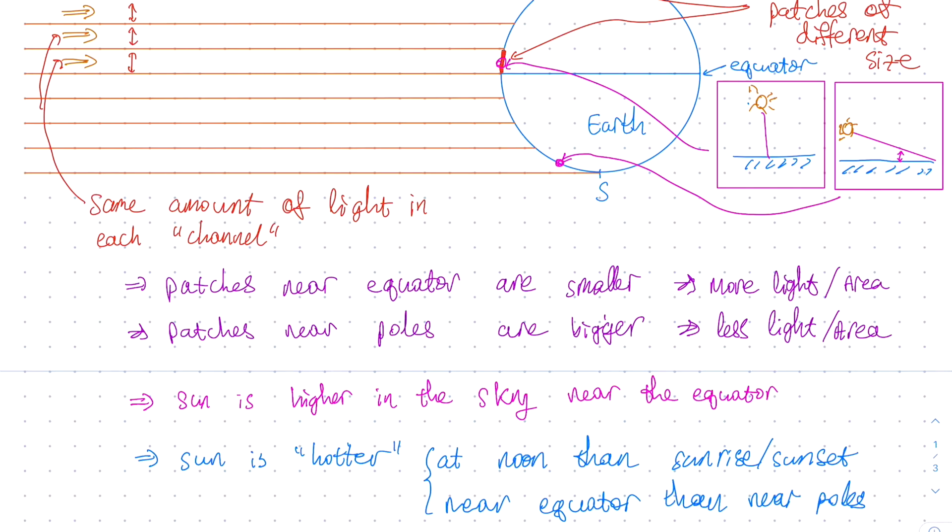In summary, differential heating states that the Earth gets heated more near the equator than it does at the poles. How does this differential heating drive Earth's weather? Let's take a look.